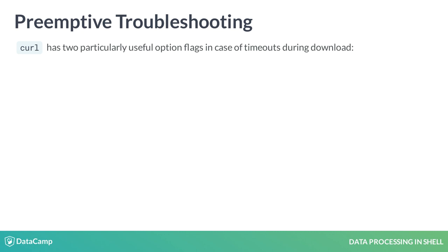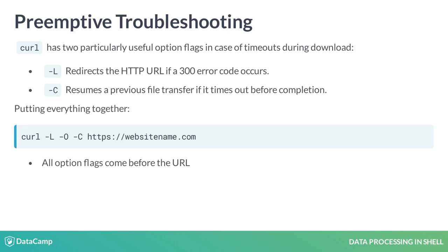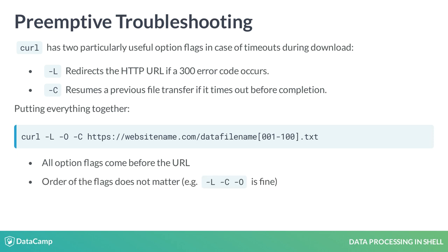Sometimes the internet can timeout. To make sure that our download progress is not lost, curl has these two flags. Dash uppercase L redirects the URL if a 300 error code occurs. Dash uppercase C resumes a previous file transfer if it times out before completion. Note that all option flags come before the URL, but the order of the flags does not matter.